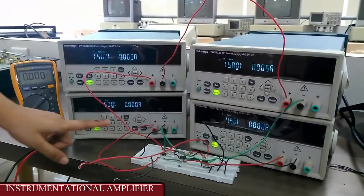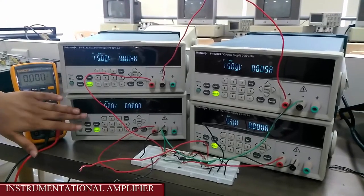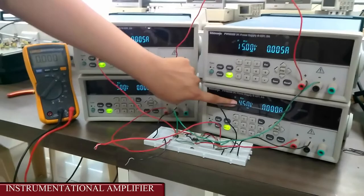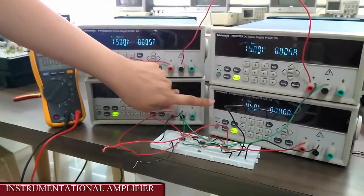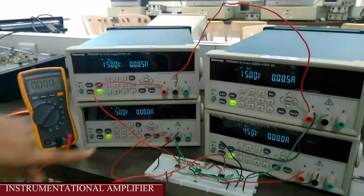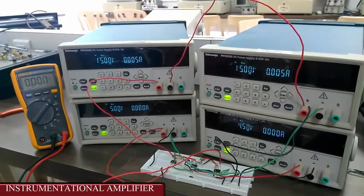Now this is V1 which is set at 5 volts, and this is V2 which is set at 4.5 volts. So the difference, that is Vd, is V1 minus V2, that is 5 minus 4.5, that is 0.5 volts. Now let's check V0.